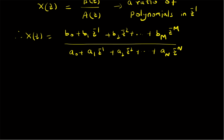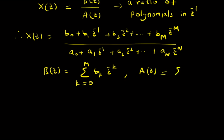The polynomials can also be written in short using summation notation. That is, B of Z can be written as summation with k equal to 0 to m of Bk Z power minus k, and A of Z can be written as summation k equal to 0 to n of Ak Z power minus k. The rational Z transform is basically the ratio of these two polynomials.